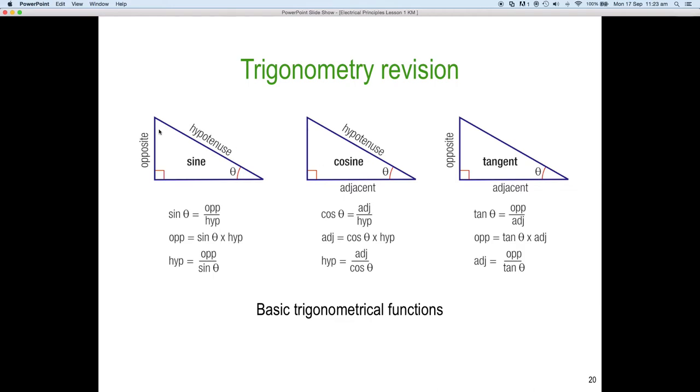So, it's adjacent on hypotenuse. So, if we were looking for the top angle here, then this would be the adjacent and down here would be the opposite. So, it just depends which angle in the triangle we're looking for. Now, in electrical theory, almost always we're looking for the angle of the hypotenuse from the horizontal.